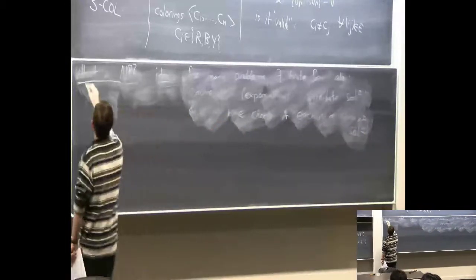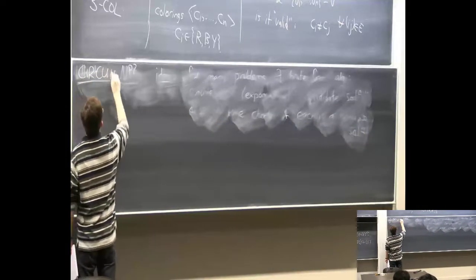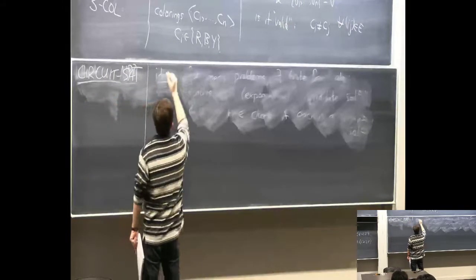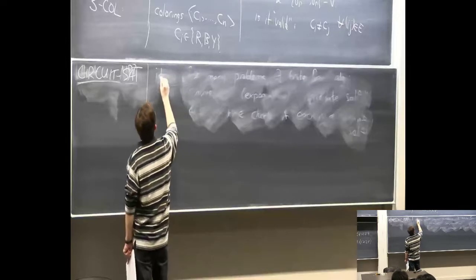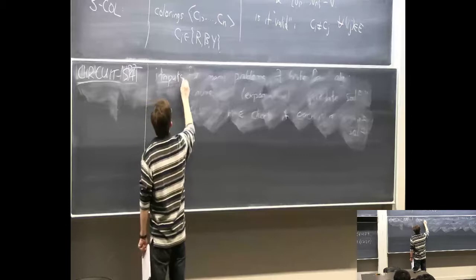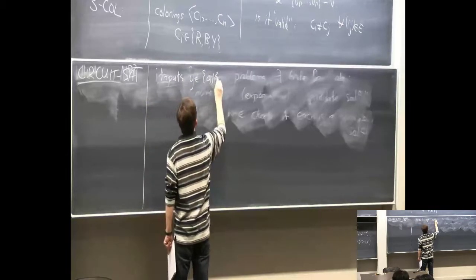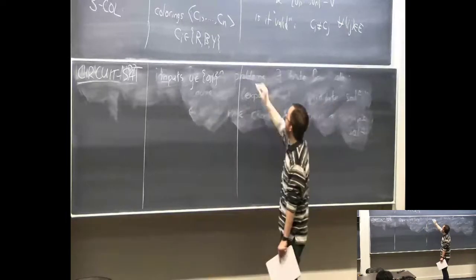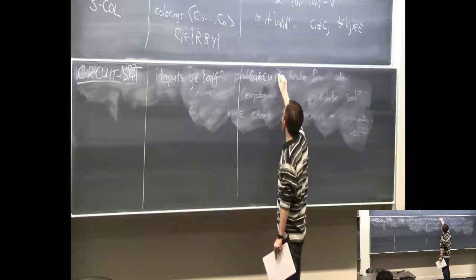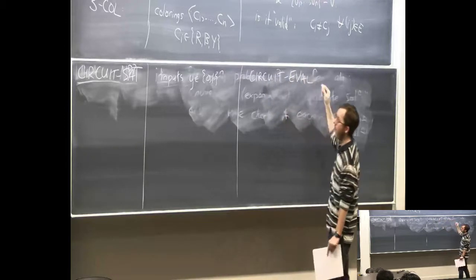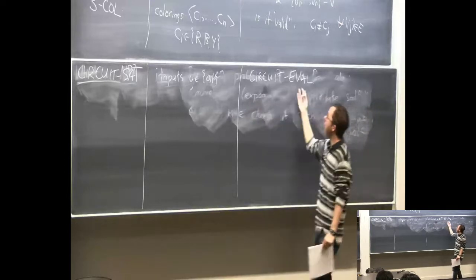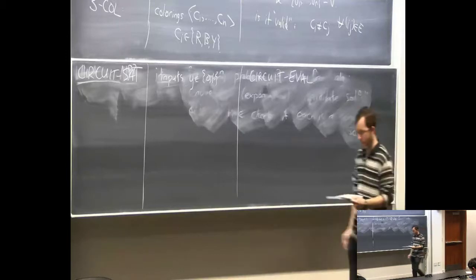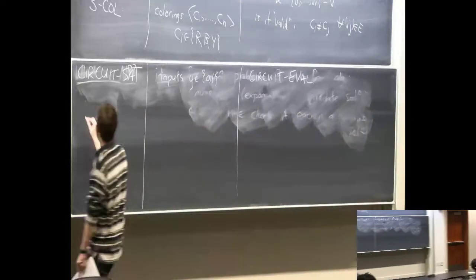Another problem with this flavor is circuit SAT. You're given a circuit and trying to see if there's an input that makes it output one. The candidate solutions are all the inputs Y in {0,1}^n, where N is the number of input wires. To check, you do circuit evaluation — you have the circuit and the Y, and evaluate to see what the circuit outputs.